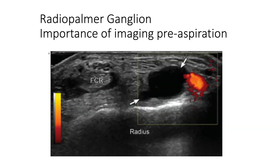Radiopalmar ganglions tend to nestle intimately against the radial artery. When aspirating with a larger bore needle you risk slicing through the radial artery while manoeuvring the needle. I'm happy for people to attempt dorsal ganglion aspiration without image guidance, but I would strongly discourage aspirating a palmar ganglion without image guidance.